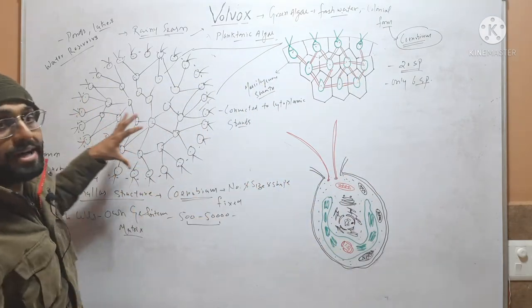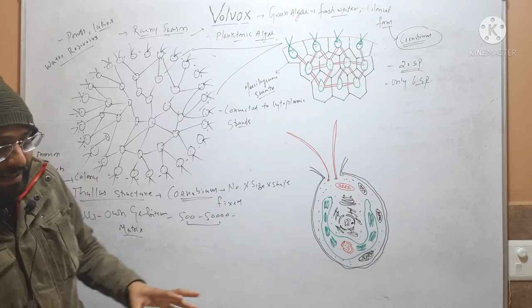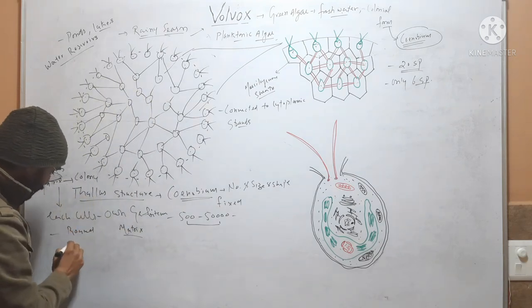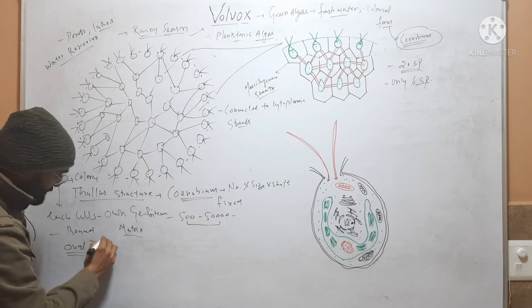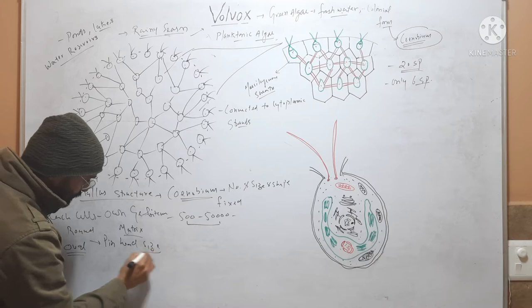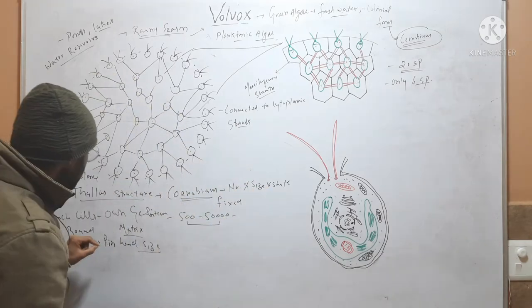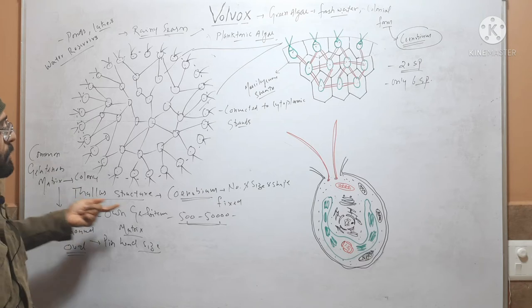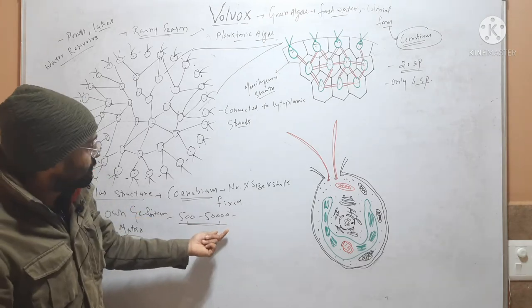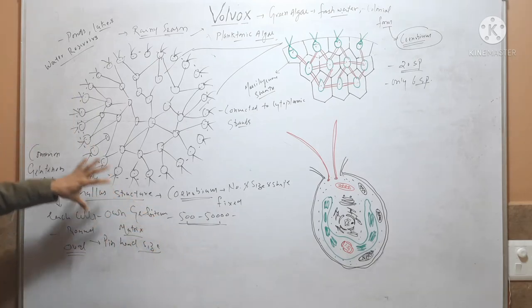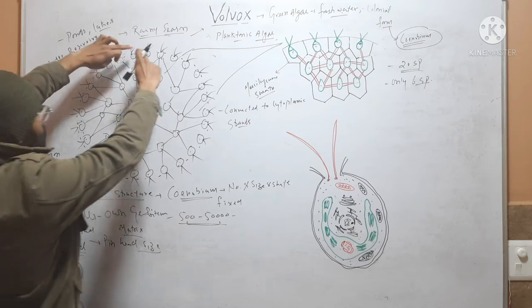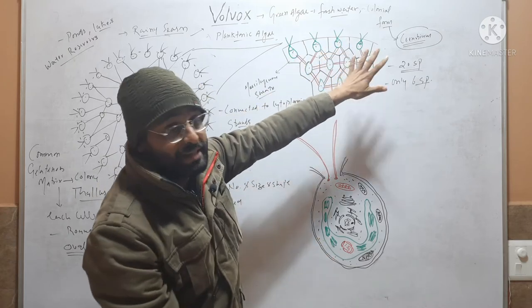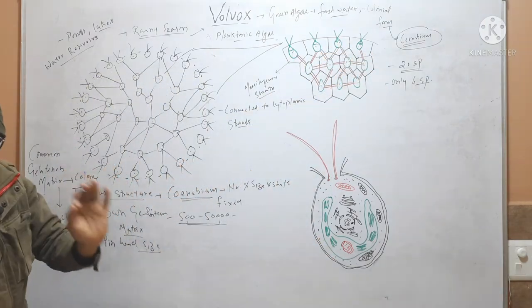In thallus structure, Volvox is a coenobial alga. The shape may be round or oval, and the size is pin-head sized. The number of cells in a coenobium may be 500 to 50,000. Cells are embedded in a common gelatinous matrix, each cell has its own gelatinous matrix, and each cell is connected to others by cytoplasmic strands.